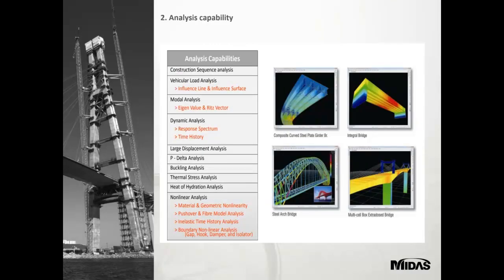Number two in the bridge software strengths is the analysis capability. In MIDAS Civil, we have all types of analysis: construction sequence analysis, vehicle loading analysis (influence lines and influence surfaces), modal analysis (eigenvalues, eigenvectors), dynamic analysis for earthquake-affected regions, large displacement analysis, P-delta analysis, and buckling analysis. Both linear and non-linear analysis are embedded in the software. For complex analysis, you can do non-linear analysis or heat of hydration analysis.